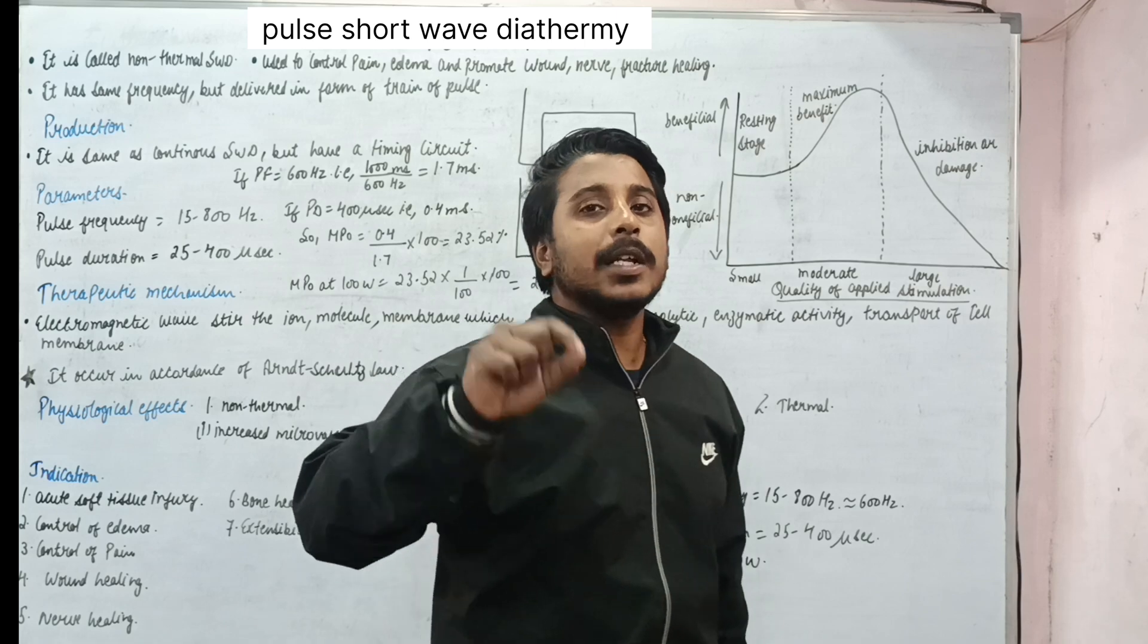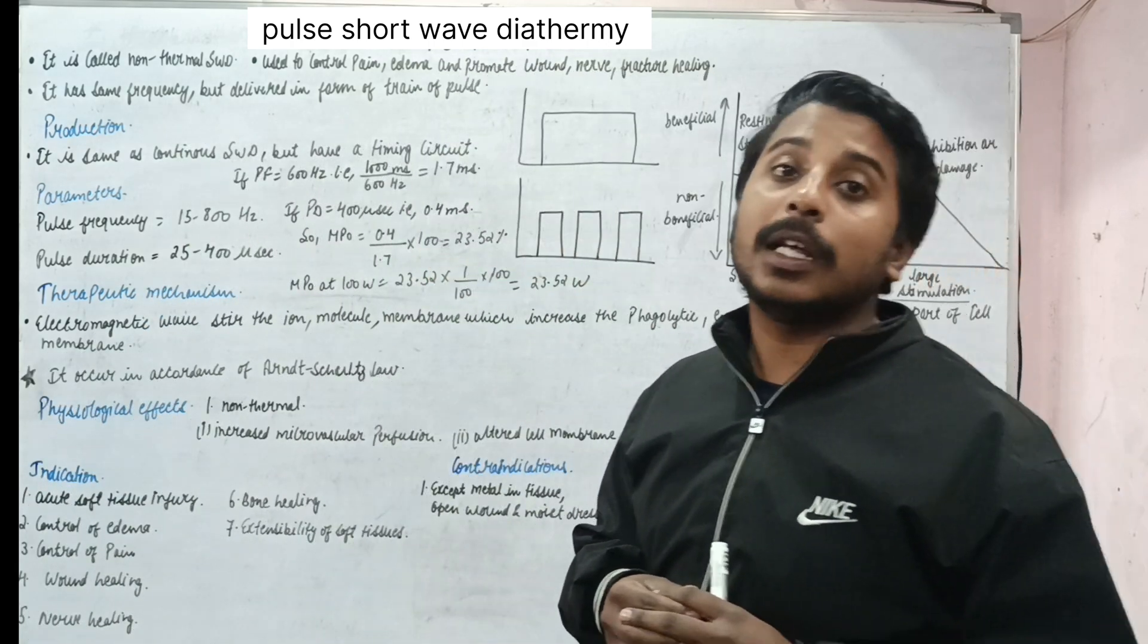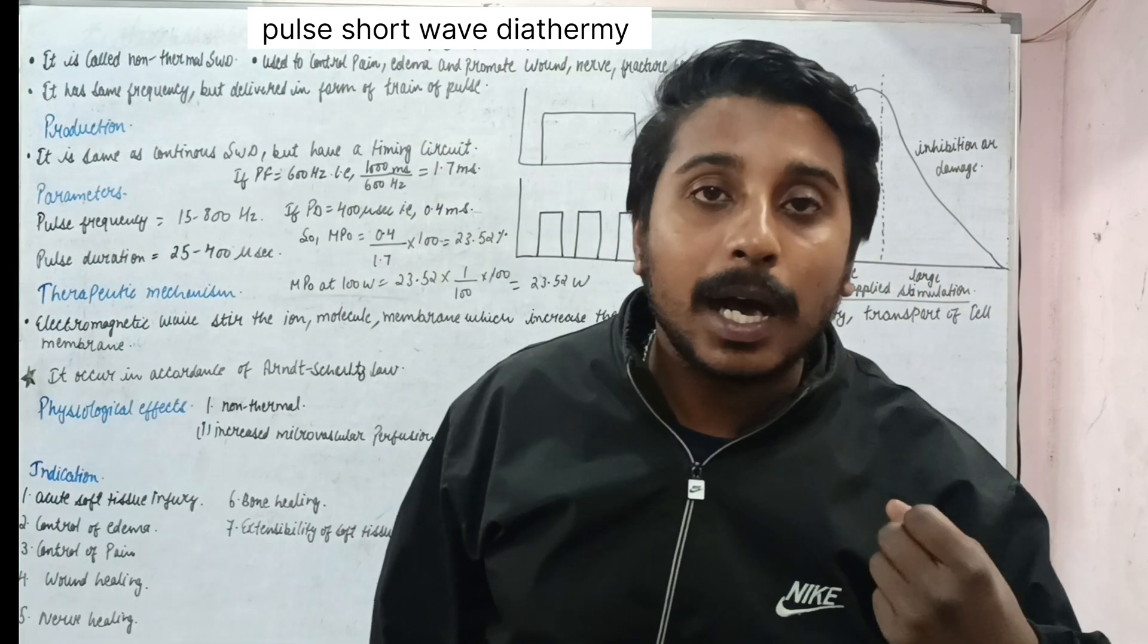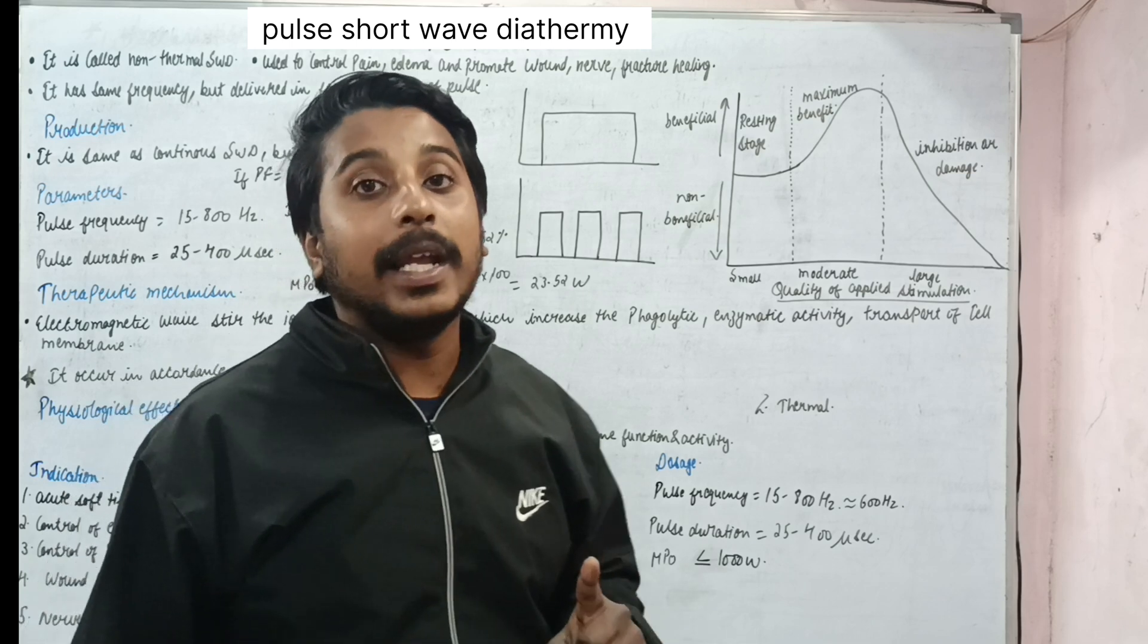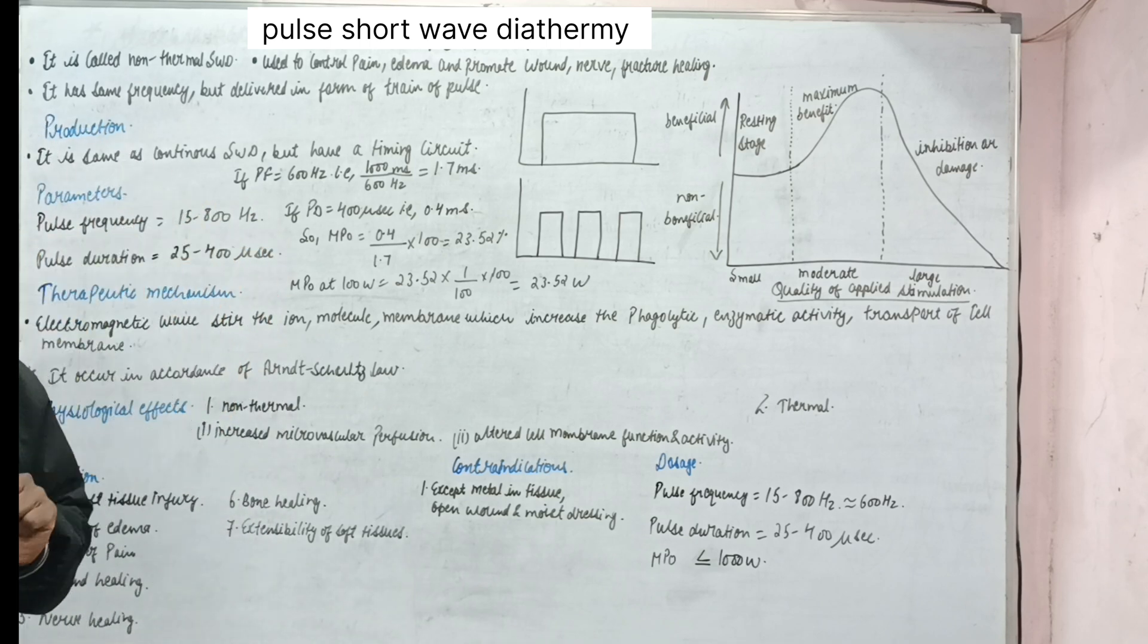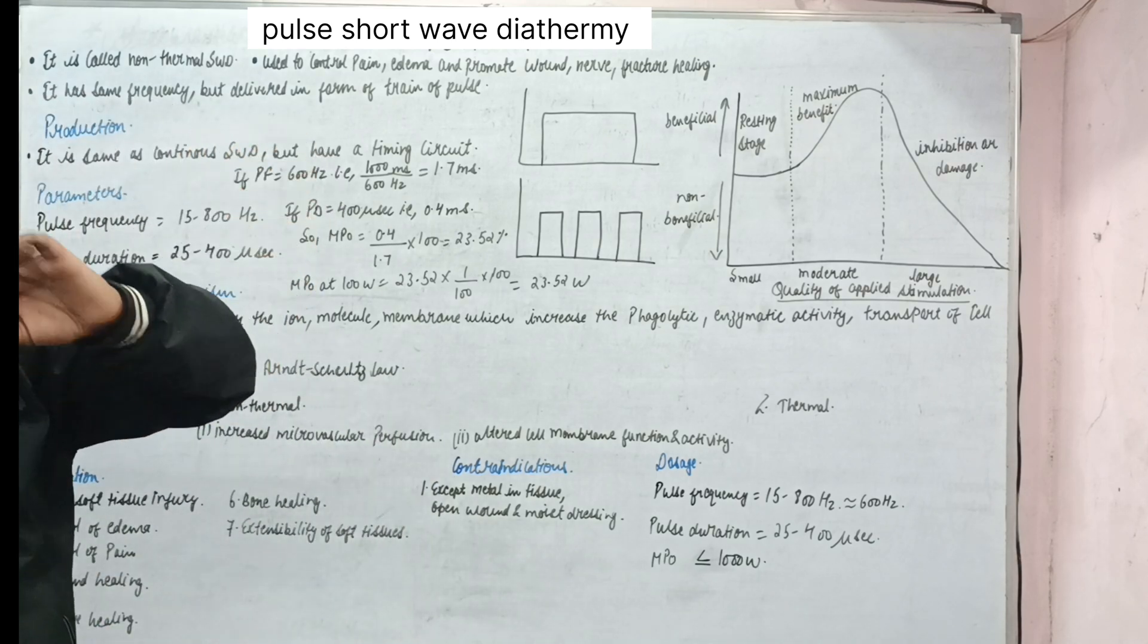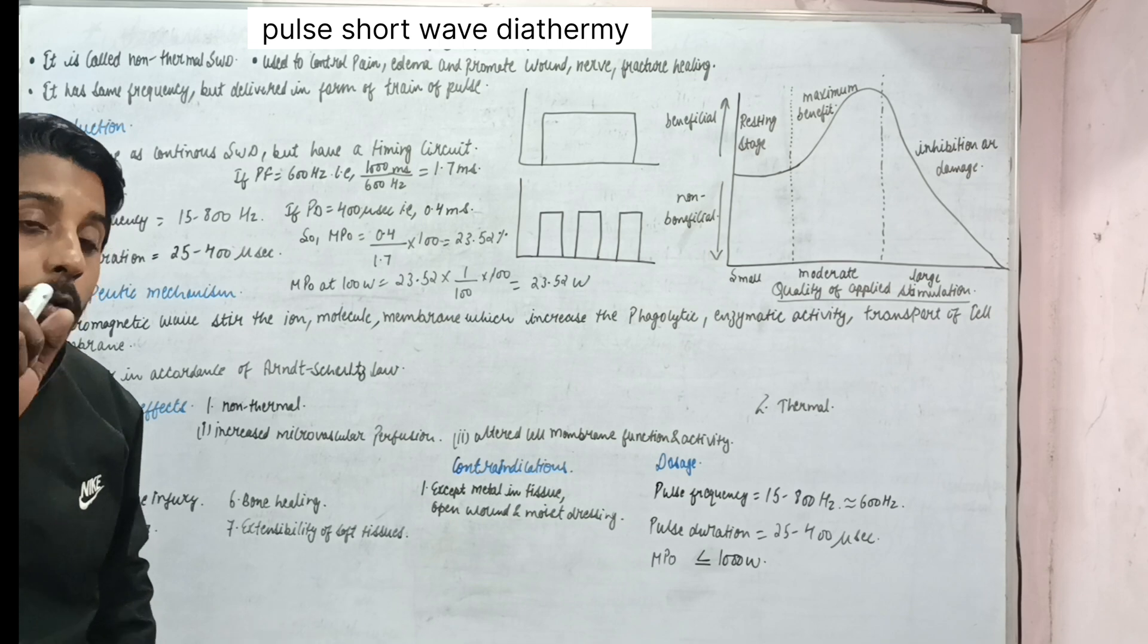So the first question is what was the need of Pulse Short Wave Diathermy? The reason was that after the discovery of Short Wave Diathermy, many studies were conducted in which they used Pulse Short Wave Diathermy and found that in acute condition this was proving to be more beneficial. The continuous form was more used in chronic condition, but for acute, PSWD is used. Why? Because it gives interruption in the emission of Short Wave Diathermy which further reduces the thermal effect, and you know very well that in acute condition we need non-thermal effect. So it proved to be more beneficial than continuous short wave diathermy in acute condition.